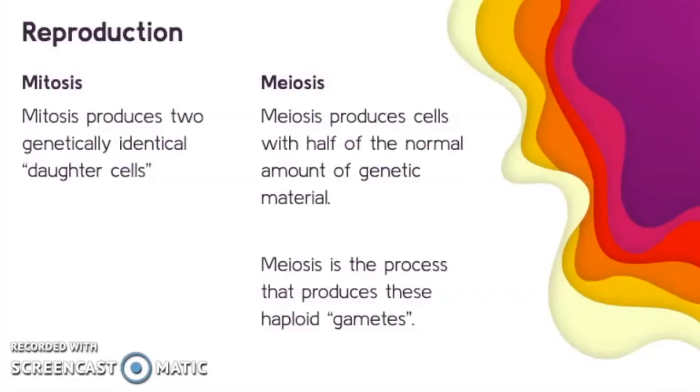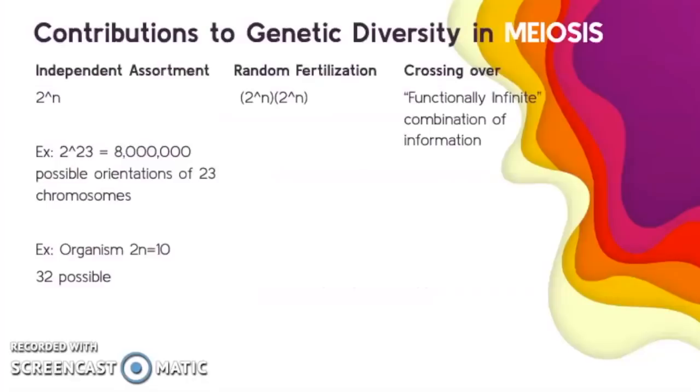For reproduction, make sure you review the different types of reproduction. Mitosis is producing two genetically identical daughter cells. Meiosis produces cells with half of the normal amount of genetic material, and meiosis is the process that produces haploid or sex cells or gametes. We have lots of reasons we have genetically diverse populations for those organisms that undergo meiosis, some of which are the independent assortment that occurs, random fertilization that happens, and then crossing over, which can lead to a functionally infinite combination of genetic information.